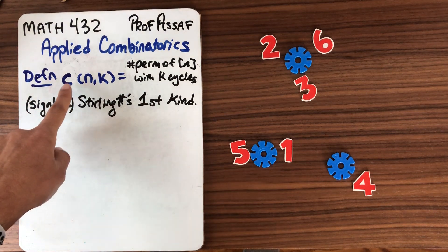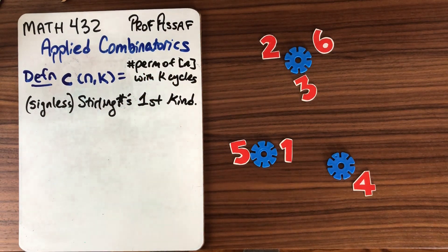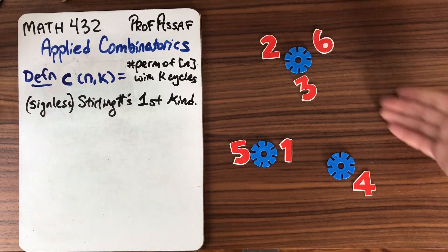These are often denoted with this lowercase c. c(n,k) counts the number of permutations of n with k cycles. Remember the second kind counted set partitions of n into k blocks. Now instead of blocks I have cycles.